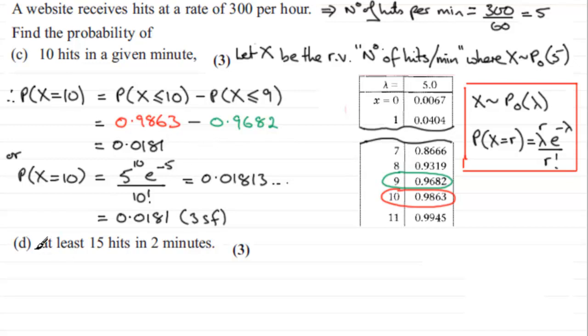Now in part D, we've got to find the probability of at least 15 hits in 2 minutes. So what we've got to do now is to redefine X up here. So if we just say let X, we could use any other letter if you like,